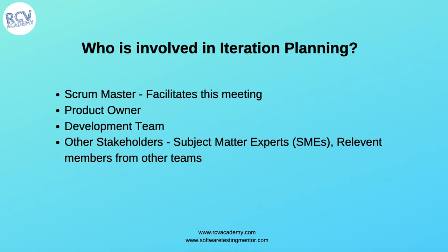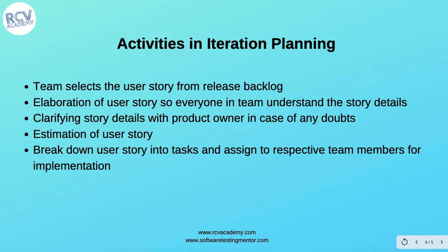The activities in iteration planning start with the team selecting user stories from the release backlog. The Product Owner prioritizes the release backlog and the user stories that need to be picked up in priority order of development. From that release backlog, the team picks the user story and it is then elaborated upon.